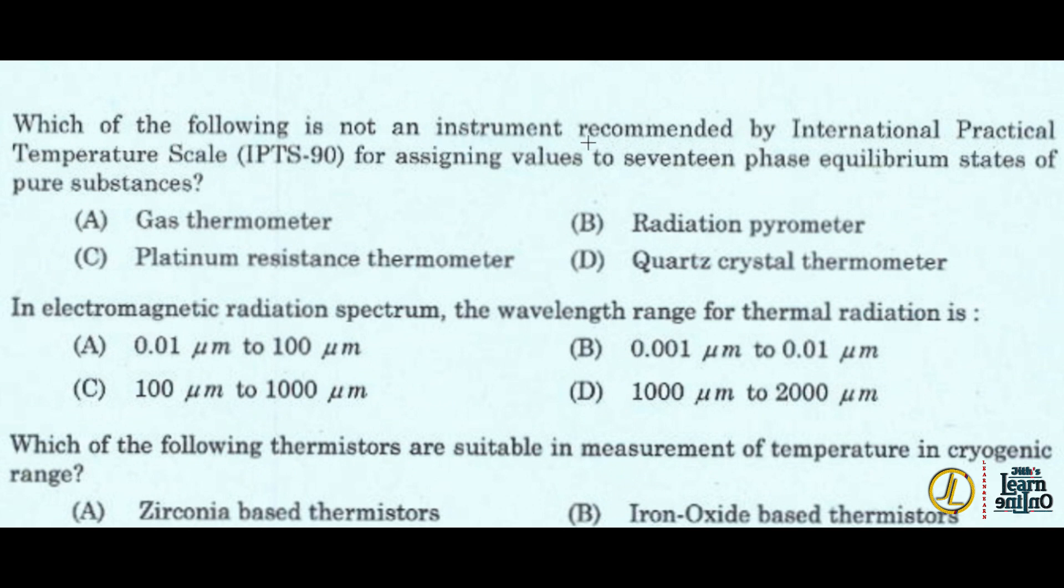Which of the following is not an instrument recommended by International Practical Temperature Scale for assigning values to 17 phase equilibrium states of pure substances? Option D, quartz crystal thermometer.